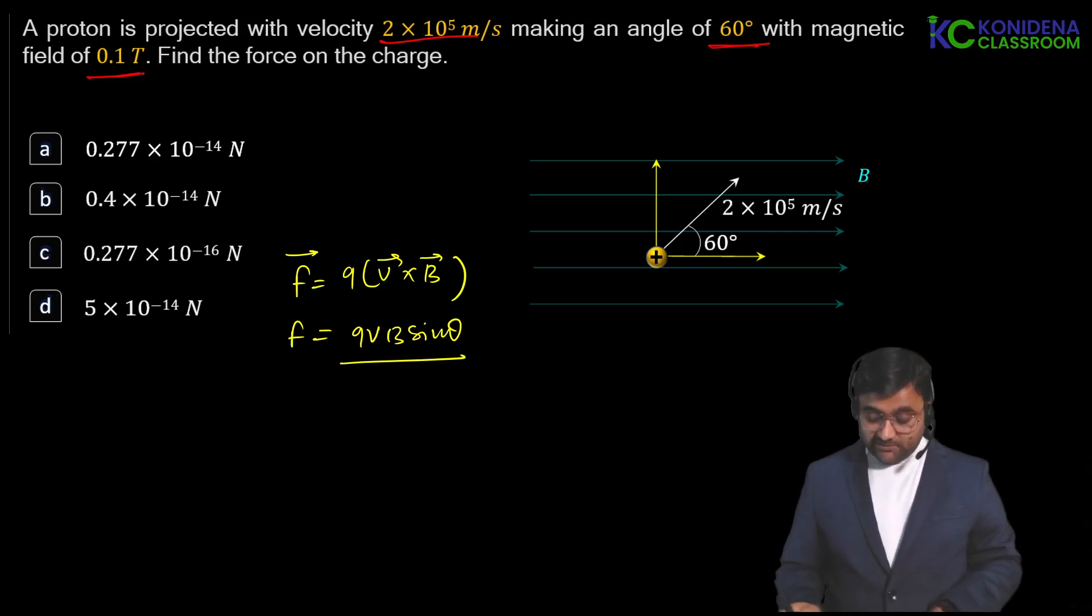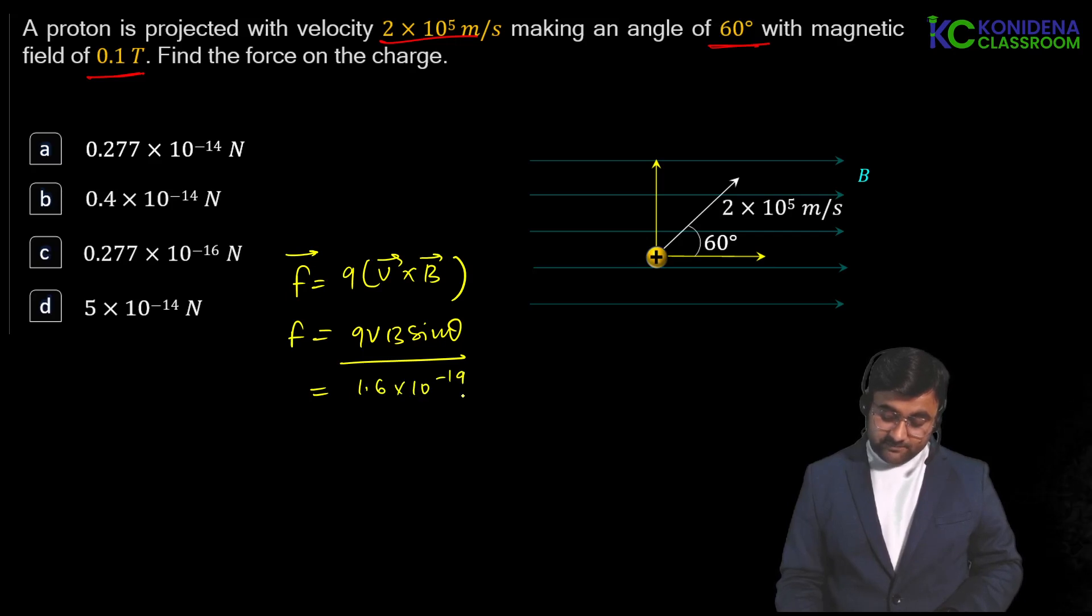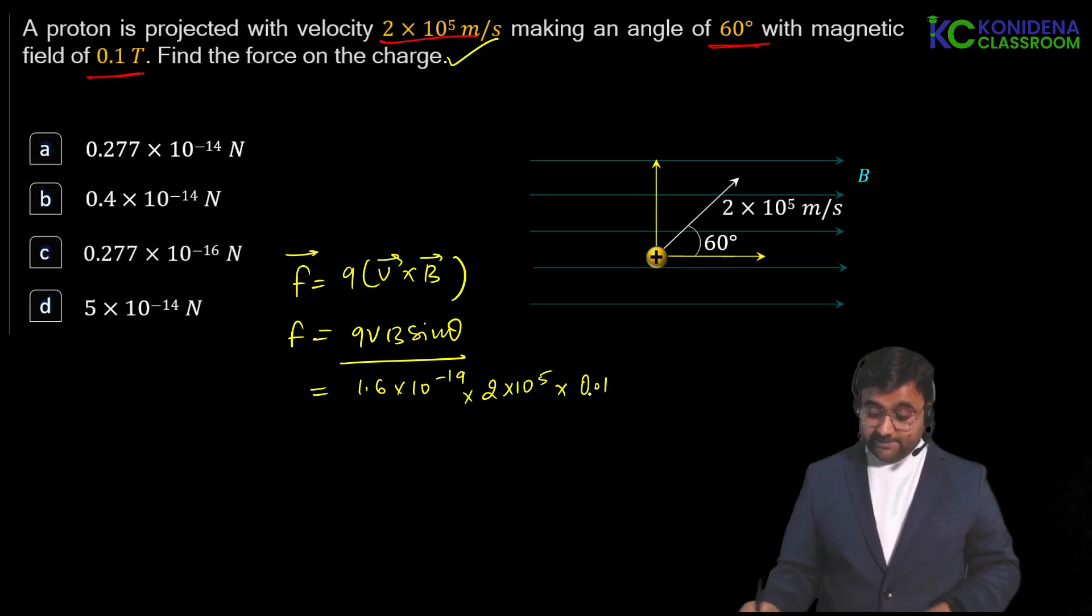So as per the question, what are the information we have given? We have a proton, that means the charge is 1.6 x 10 to the power minus 19 coulomb into velocity, that is given to us already: 2 x 10 to the power 5 meters per second, magnetic field 0.1, and this angle is 60 degrees. So sine 60 is just root 3 over 2.